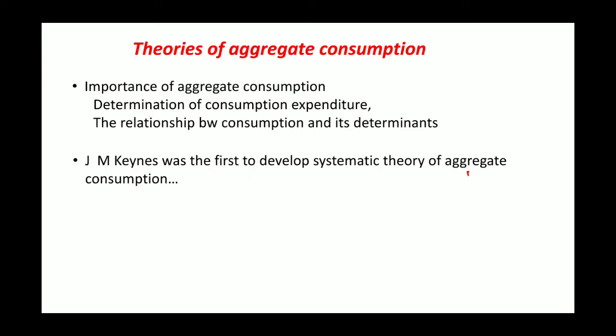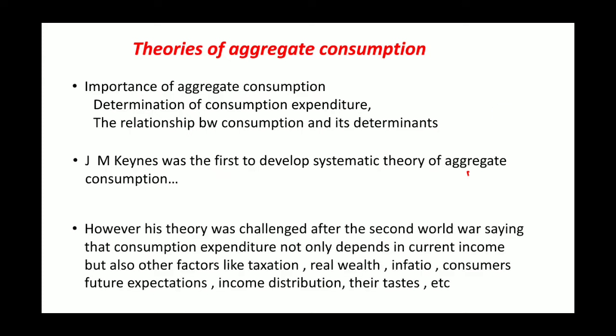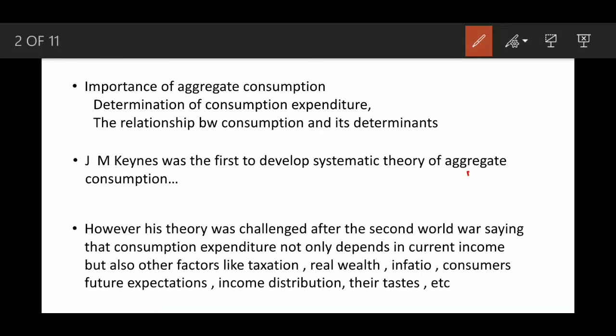As classical economists said, income is the major determinant of consumption. There are some other determinants as well, like tastes, wealth, and savings. Along with these, income remains the main source determining consumption. In these theories, we are studying the relationship between consumption and its determinants.